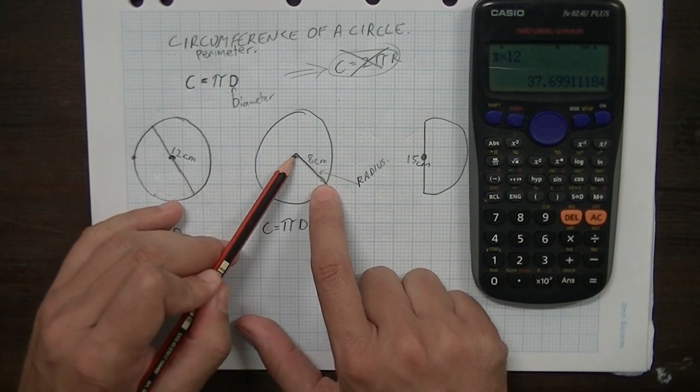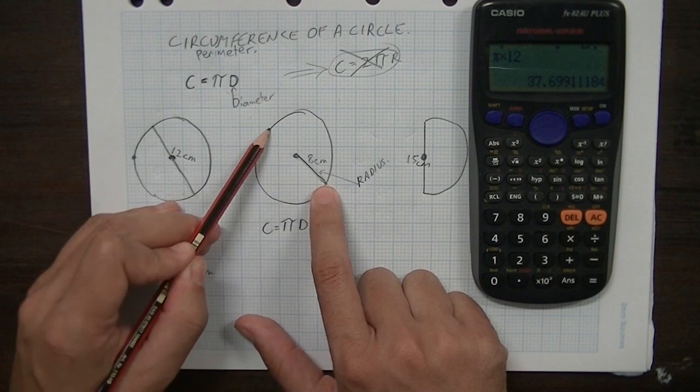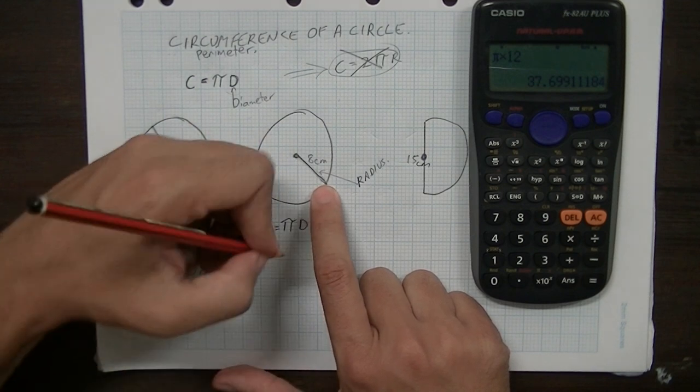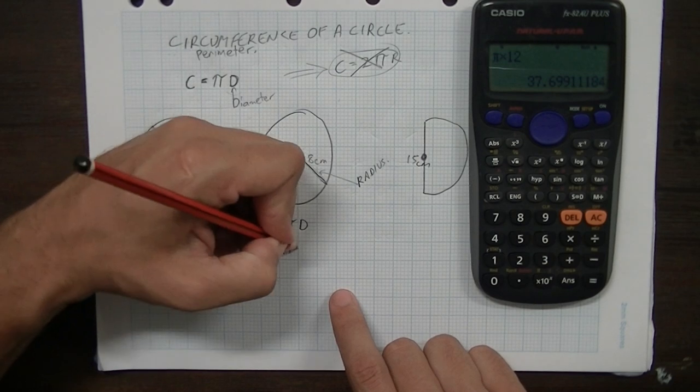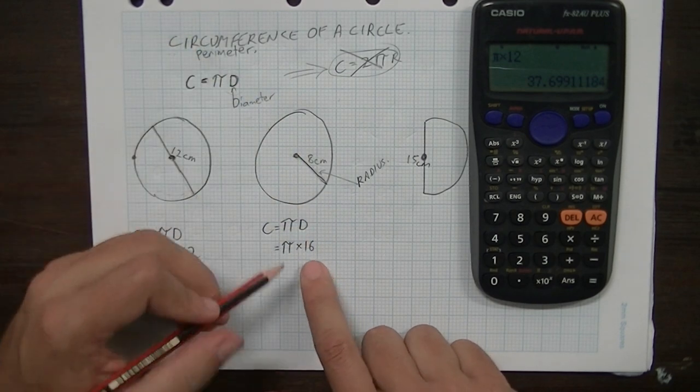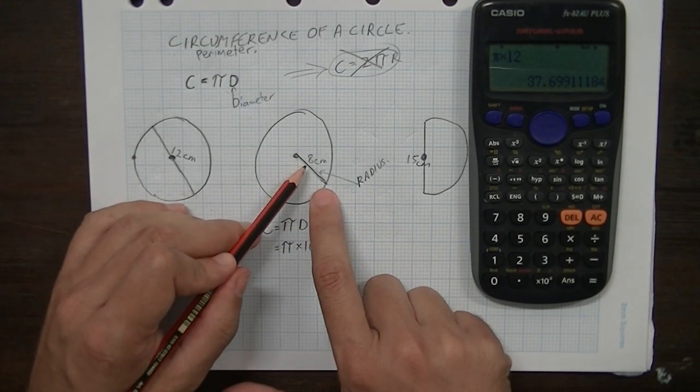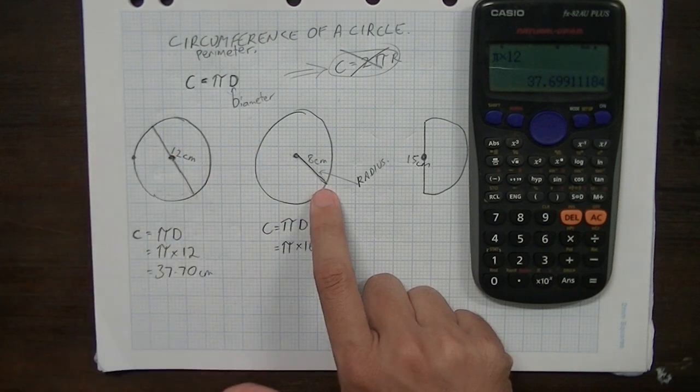So that's an 8 centimetre radius, which means that double that's going to be the diameter, which is 16. Don't forget to do that. That's a mistake that a lot of people make when it comes to the test. Is it a radius? Is it a diameter? And then decide whether you need to multiply it by 2 or not.